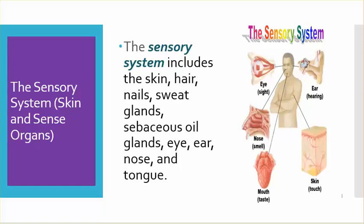The sensory system includes the skin, hair, nails, sweat glands, sebaceous oil glands, eye, ear, nose, and tongue.